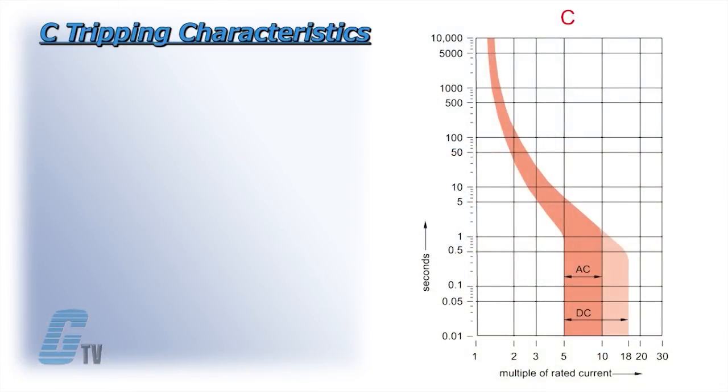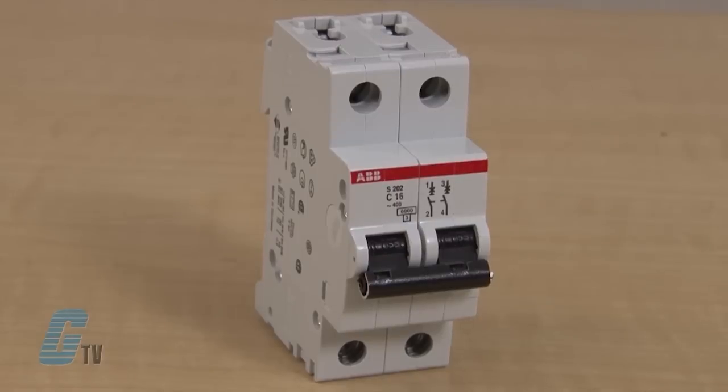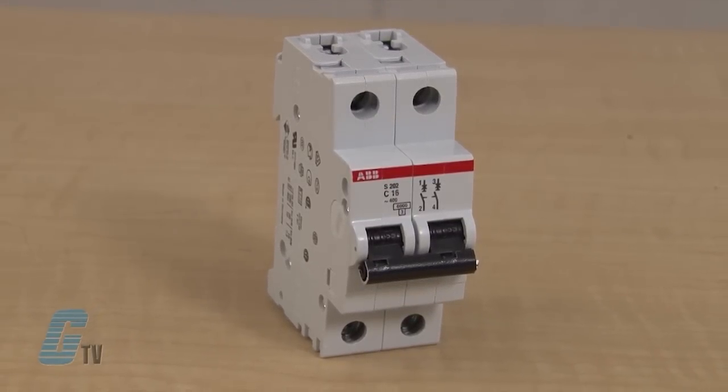The C tripping characteristic has rated currents up through 63 amps. The C time current curve is designed for medium magnetic start-up currents. Instantaneous tripping occurs between 5 and 10 times rated current in 50 or 60 Hz systems. The C characteristic is also available in other S2 series miniature circuit breakers.